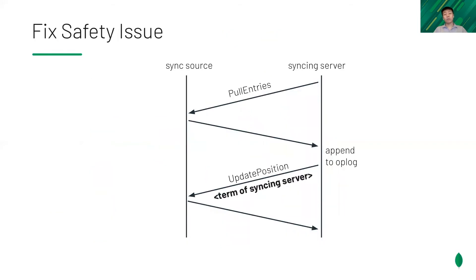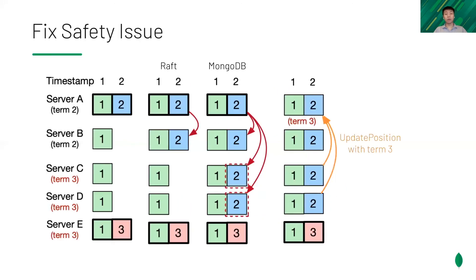To prevent this from being a problem, we added a new argument in updated position: the term of the syncing server. The sync source will update its term accordingly. In the example, when server A receives updated position, it will see term 3 and step down immediately without committing the blue entry, thus avoiding any safety issues.